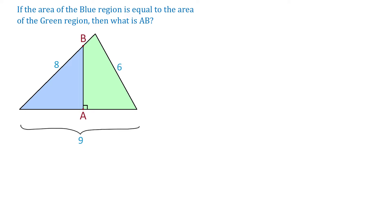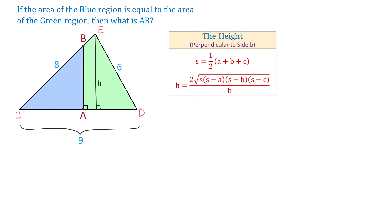First, let's call this triangle C, D, E. Then we will start by finding the height of this triangle using the following formula. If we have a triangle with three given sides A, B, and C, and the height is perpendicular to side B,